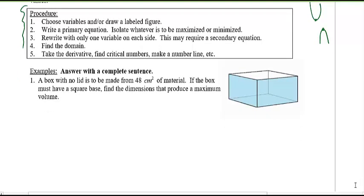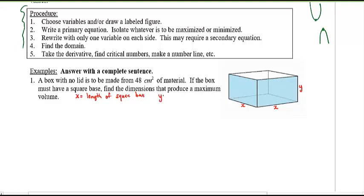We have a box with no lid made from 48 centimeters squared of material. The box must have a square base. Find the dimensions that produce maximum volume. Since it's a square base, let x equal the length of the square base — so x and x at the base. Let y represent the height of the box.